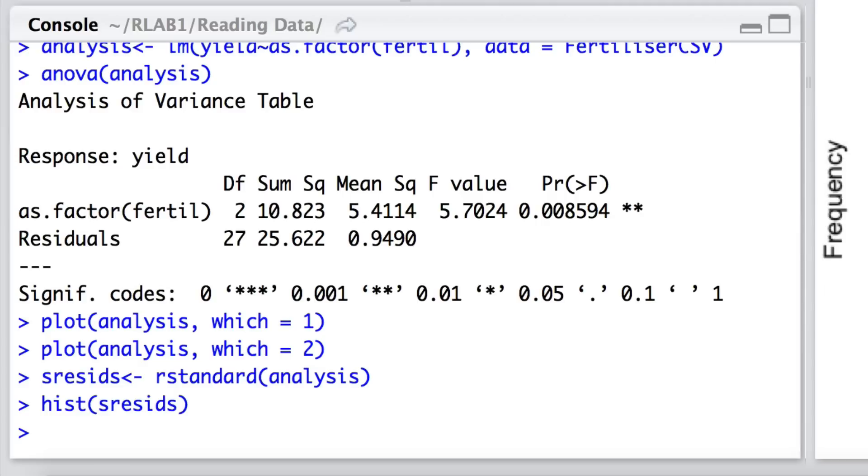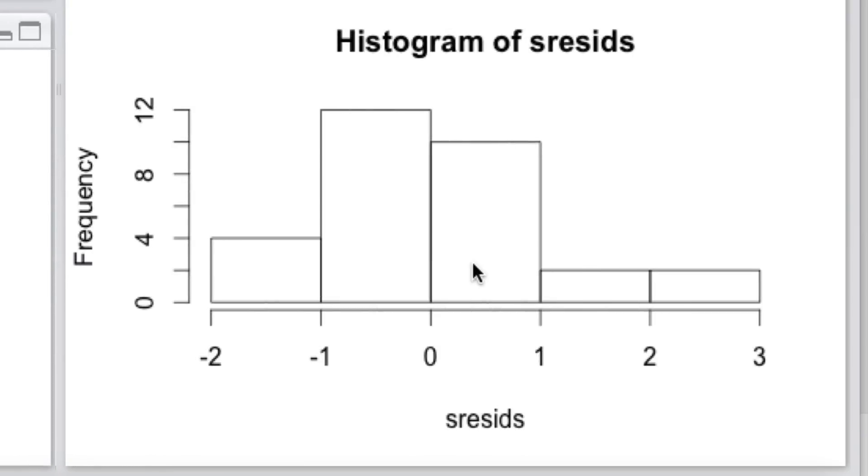And then we're going to simply plot the histogram of those residuals, and this is what we see here. So although we don't really have that much data to really evaluate this assumption of normality, there does seem to be something of a positive or right-hand skew in these data, but nothing too much to get concerned about.